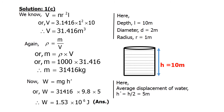We now have mass, average height, and acceleration due to gravity. To calculate the work done, we use W equal to m·g·h-prime. Putting in the values of m, g, and h-prime, we get the work done equal to 1.53 × 10⁶ joule. That is the answer to part C.